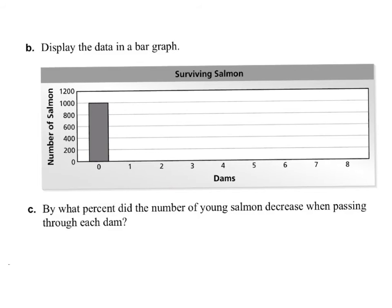In part B of our activity, on page 130, we're asked to make a bar graph of the surviving salmon. So those are the salmon who make it through the dam unscathed. After dam 1, there are 880, so that's right about here. And then after dam 2, there are 774. So that is close to the 800 line, but not quite. So it should look like that.